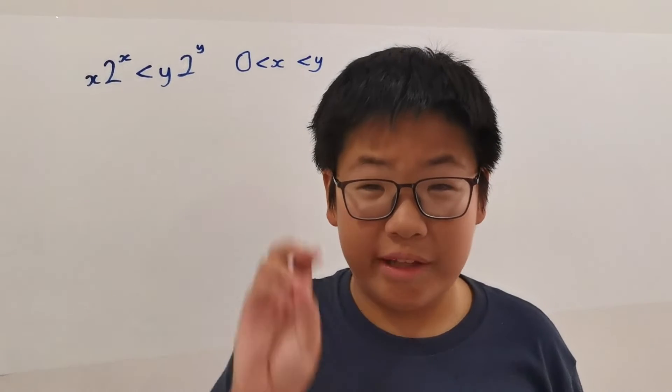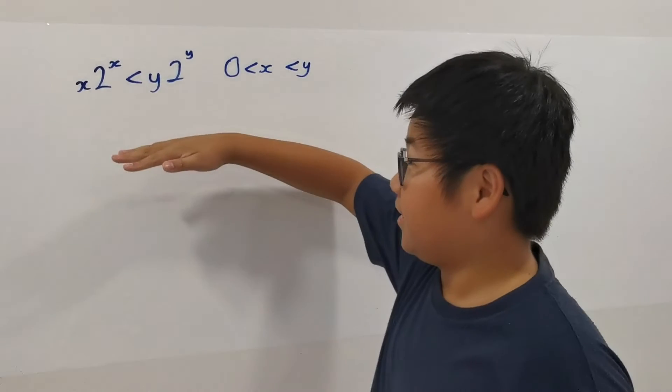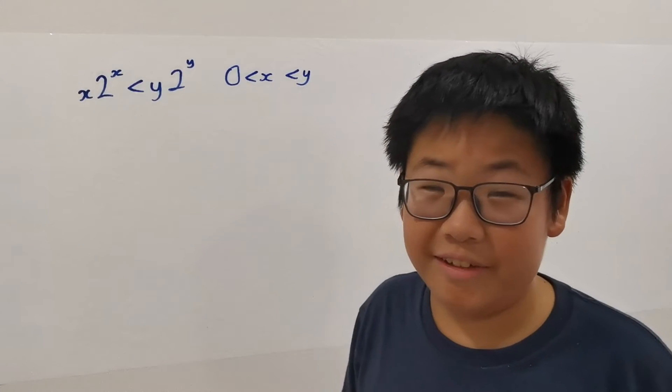Suppose that there are two integers x and y. They are governed by this relationship. How many pairs of x and y are there such that it can fit the solution?